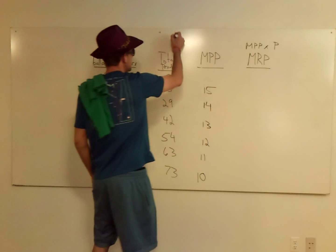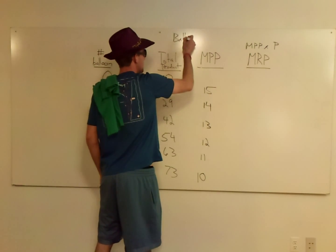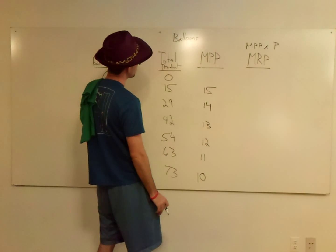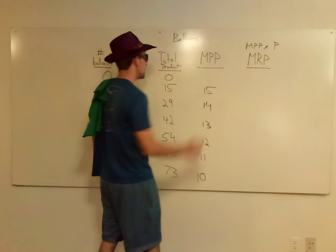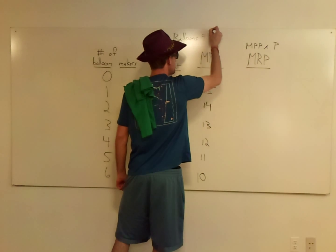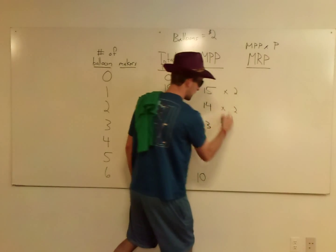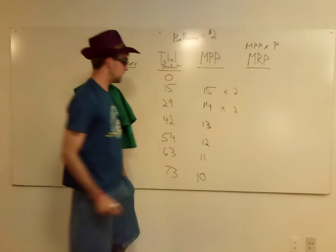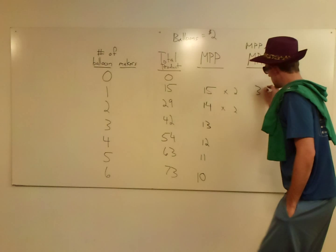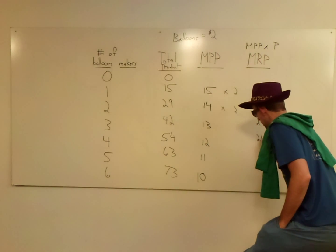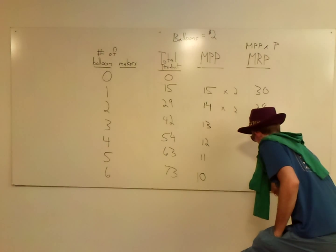Because what this is going to do here is we're going to figure out in dollars, we're going to put a dollar value on how much our balloon makers are worth. So let's say balloons are two dollars. So all you do is you multiply all these by two, and I'm not going to write it all the way down through here, but it looks like I'll go 30, 28, 26, 24, 22, 20.